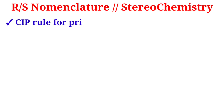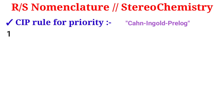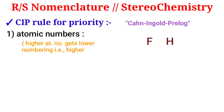In order to define RS configuration, we first have to know about the CIP rule for group priority. CIP stands for Cahn-Ingold-Prelog. They give a rule for priority based on: number one, atomic number — higher atomic number gets higher priority. For example, fluorine has a higher atomic number than hydrogen, so fluorine gets higher priority.